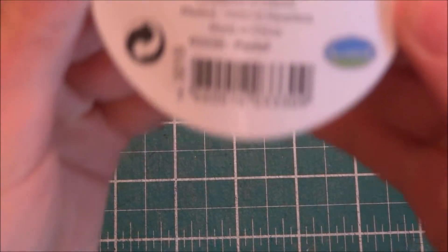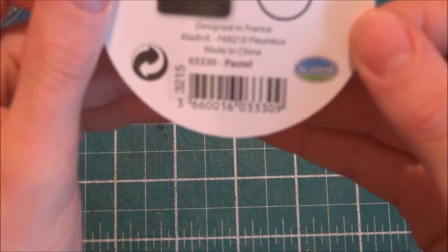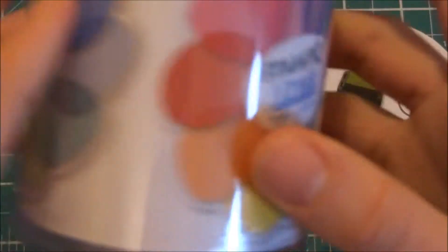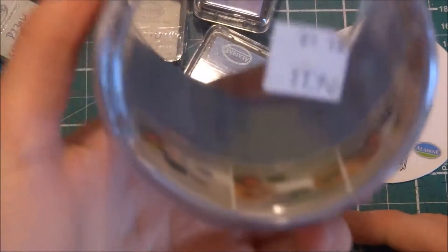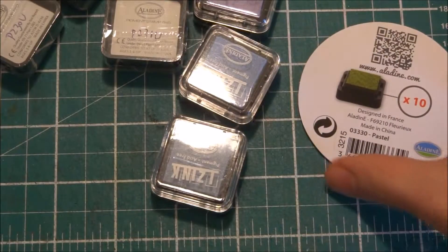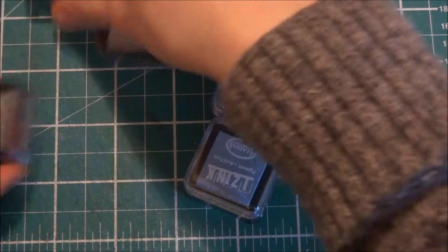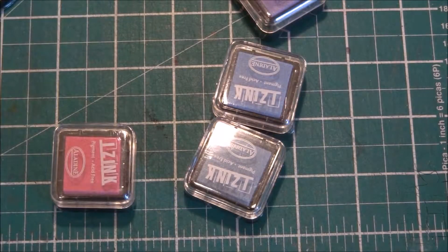The last thing I got was this stamp ink set by Aladdin. I'll show you the colors - you get 10 of them. It's 11.90, so about 12 euros, and it's a good deal for ink pads. At first I thought there wouldn't be 10, but there is.